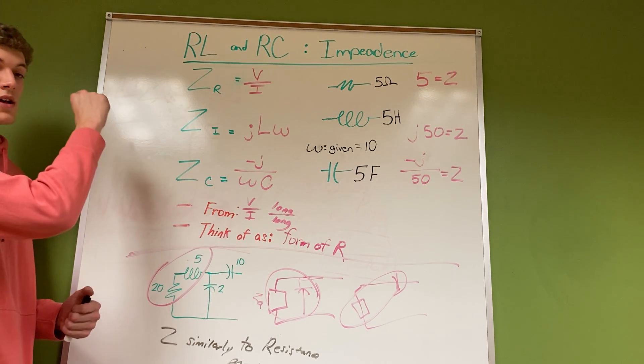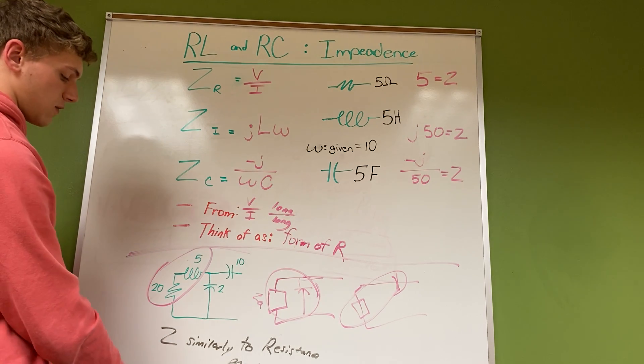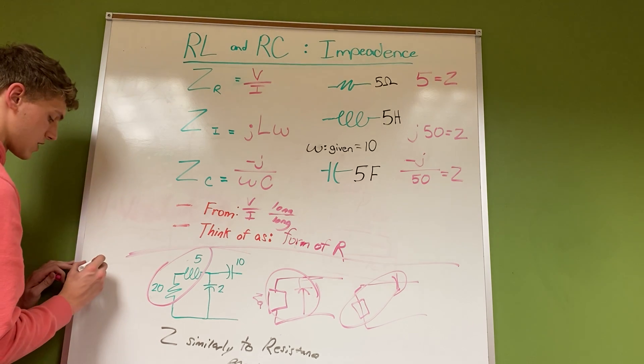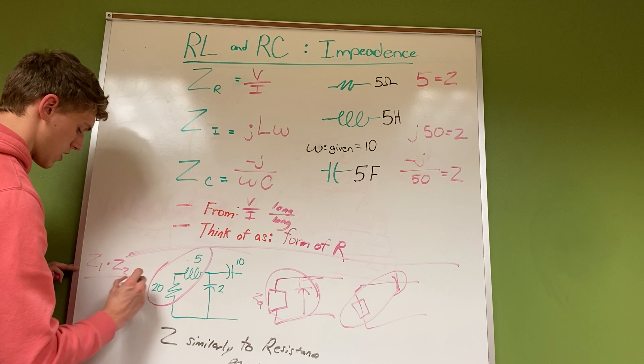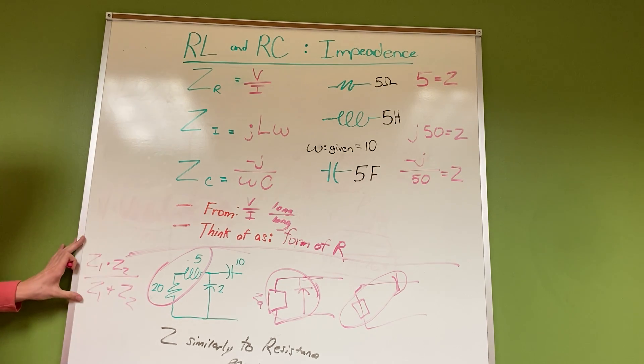You can do the same thing: the first times the second divided by the first plus the second. Or that equation for you again: Z1 times Z2 over Z1 plus Z2. That's the same equation that we use for two resistors in parallel.